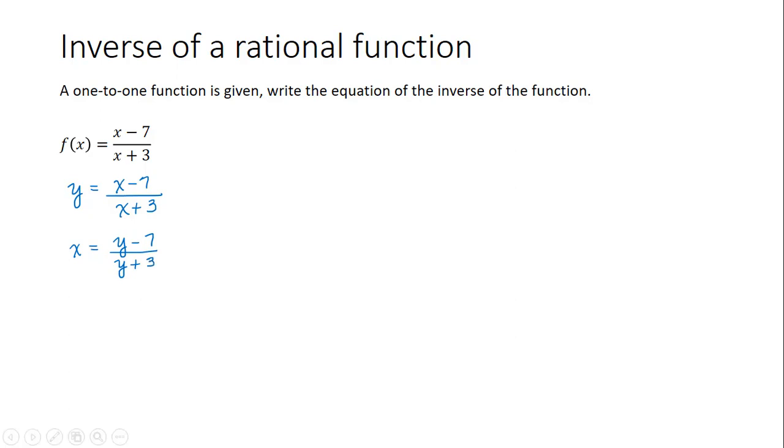Now our goal is to solve for y. We first eliminate the fractions by cross-multiplying, which gives us x times y plus 3 is equal to 1 times y minus 7, or just y minus 7.